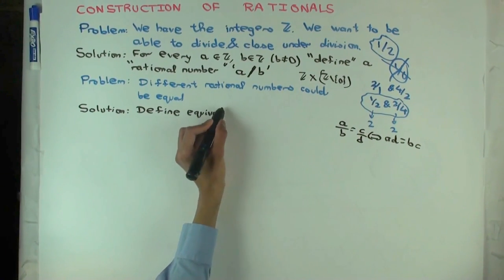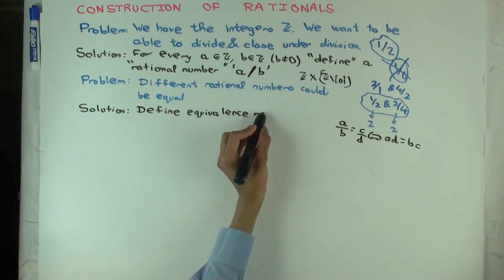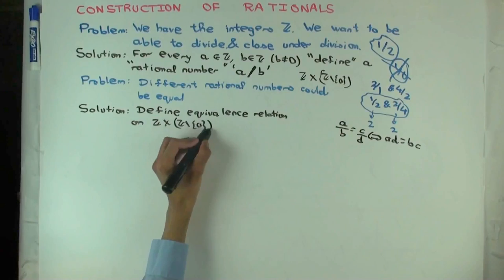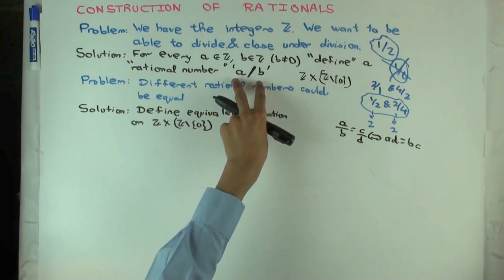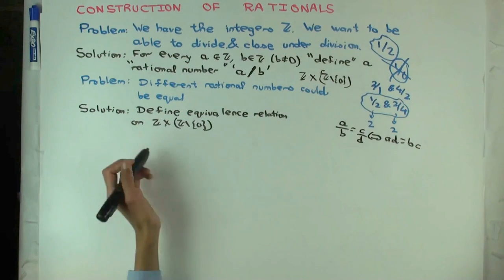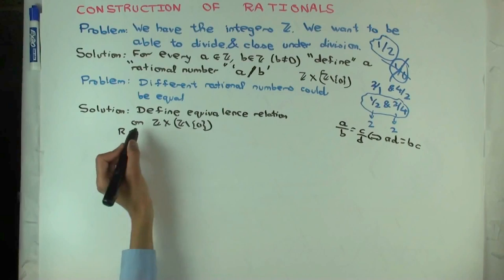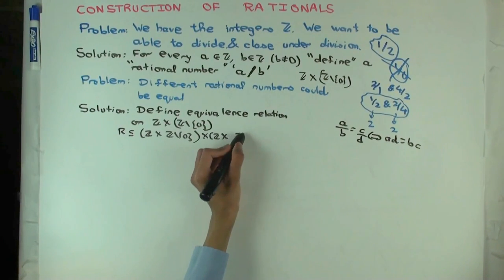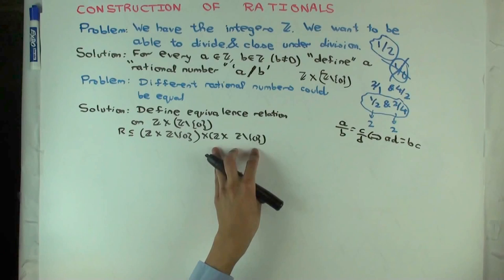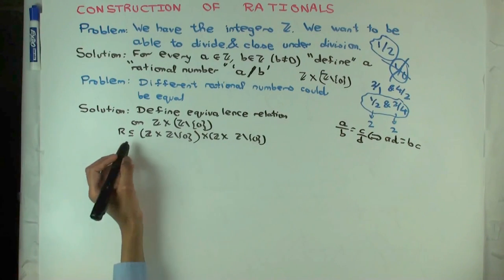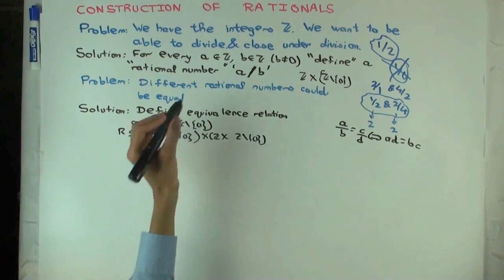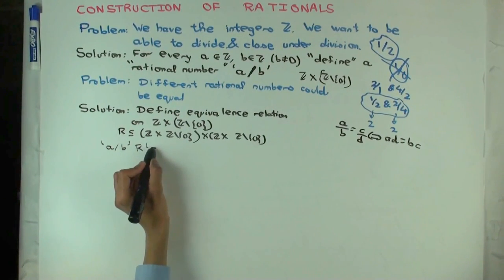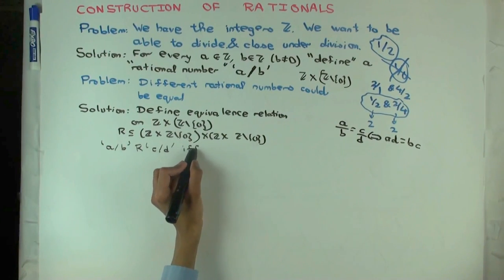So what should we do? We define our equivalence relation as A/B R C/D if and only if AD equals BC. But now you have to be careful what the equivalence relation is. The equivalence relation is on this set, which means on Z cross Z minus 0, which means it's actually a relation on pairs of pairs. So this equivalence relation R is a subset of Z cross Z minus 0, cross Z cross Z minus 0. Because you have one pair and you have another pair. I'm using slash instead of comma just to be clear, it's not actually the rational number yet.